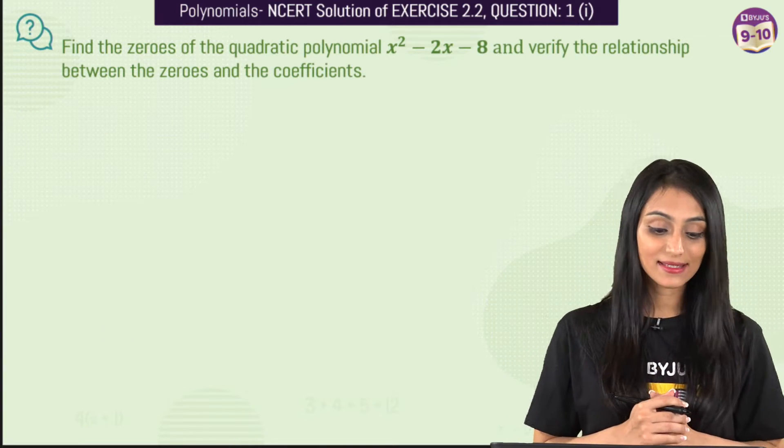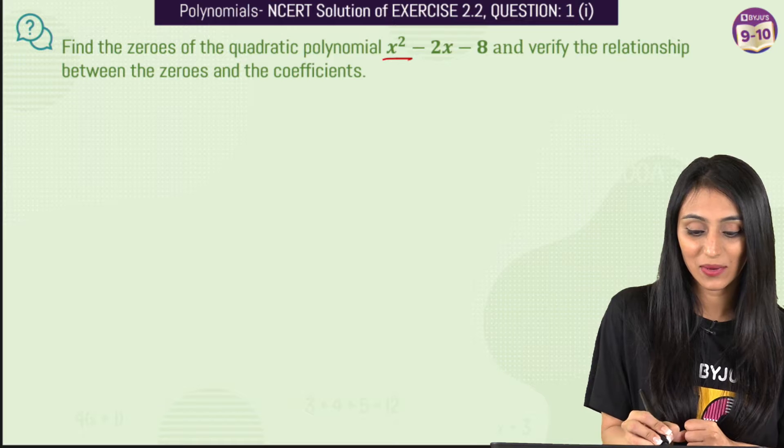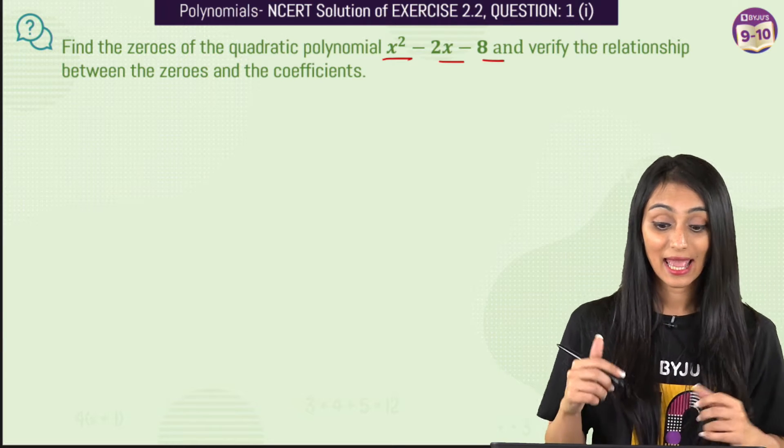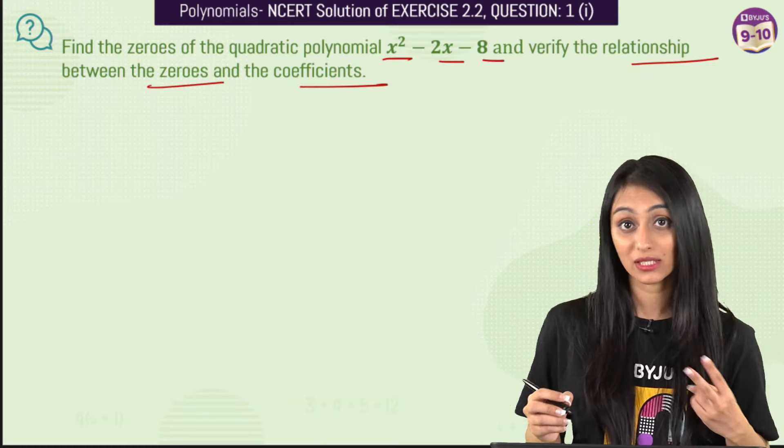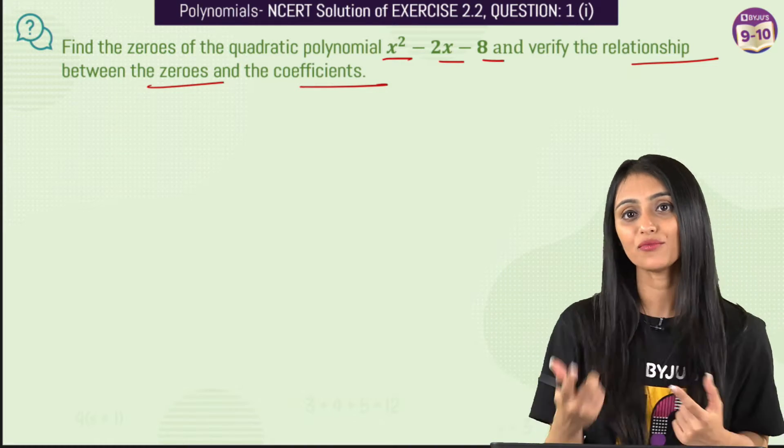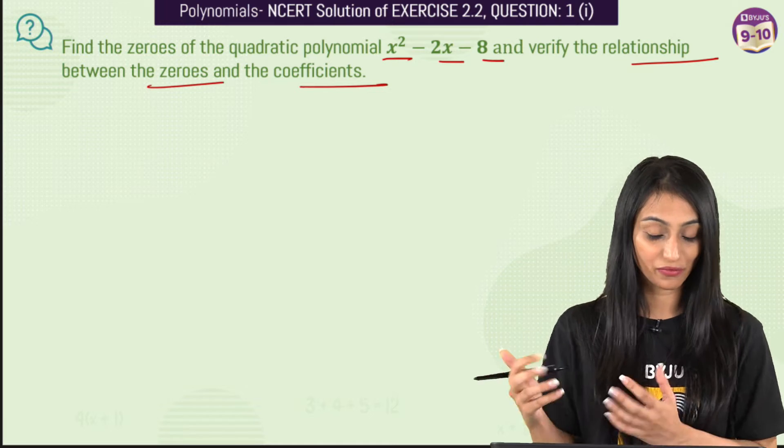So here we have to find the zeros of the quadratic polynomial x squared minus 2x minus 8 and then we have to verify the relationship between the zeros and the coefficients. Two things we have to do here. First we have to find out the zeros, then we have to verify the relationship between zeros and coefficients.